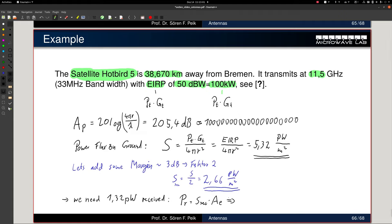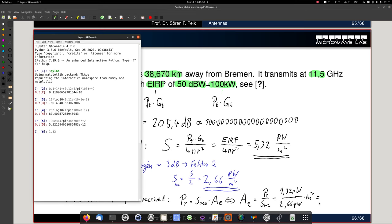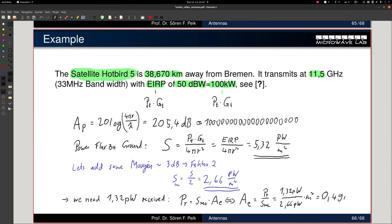We know p received is S received times my effective area. That makes my effective area, I need for my receiving antenna, p received over S received. Which is 1.32 pico watts over 2.66 pico watts per square meter. Per square meter means times meter square. So I get an area, which is good. 1.32 over same unit, that's why we can just use 2.66. You get 0.49 square meter.